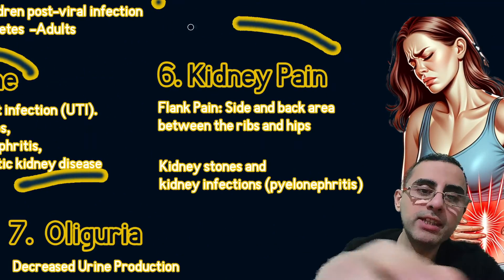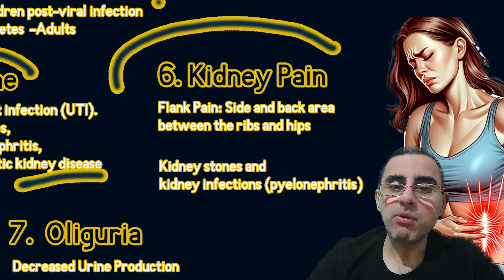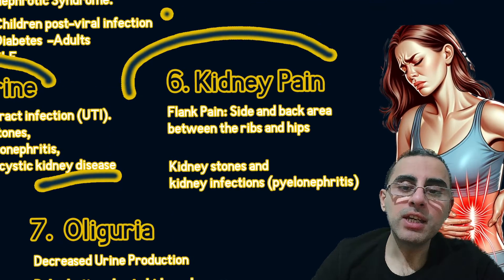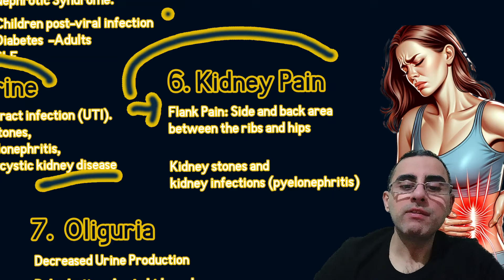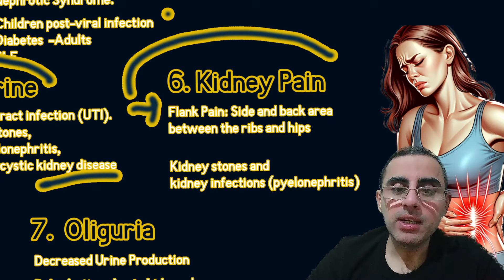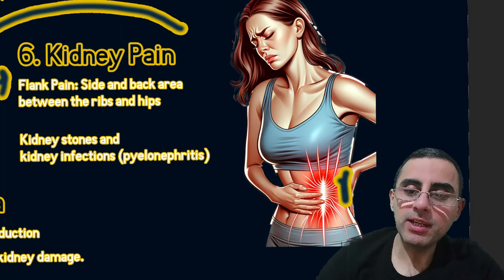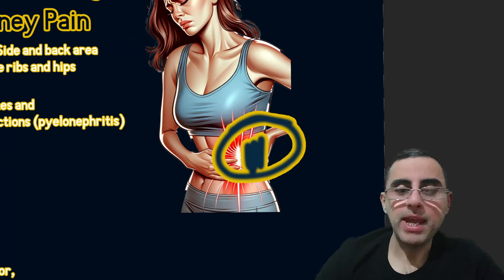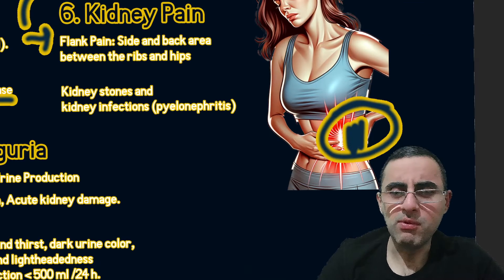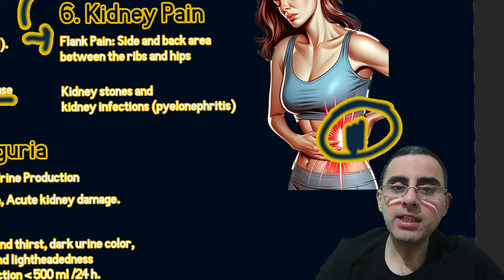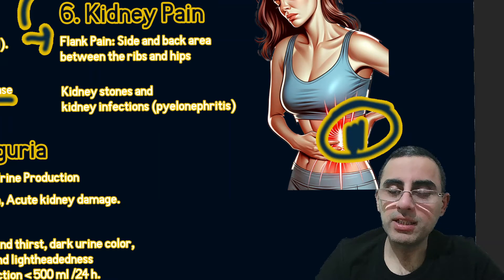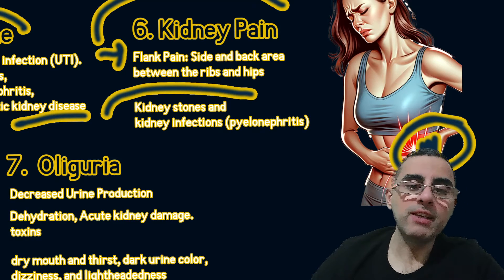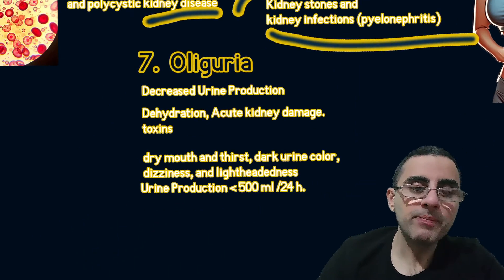Kidney pain is the sixth important symptom. It is called flank pain, which means pain in the side and lower back area between the rib and hip. Sometimes it is very severe and difficult to tolerate. Kidney pain is usually caused by kidney stones or kidney infections, which is called pyelonephritis.